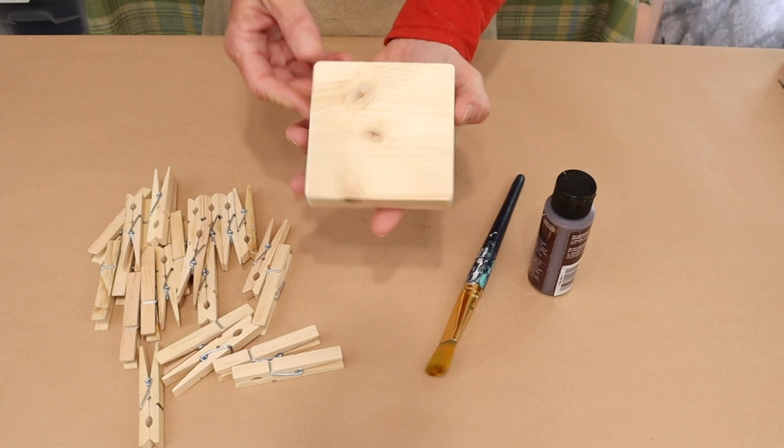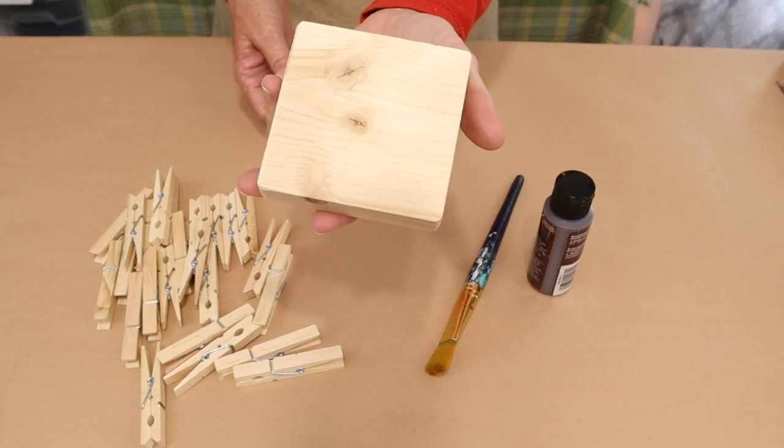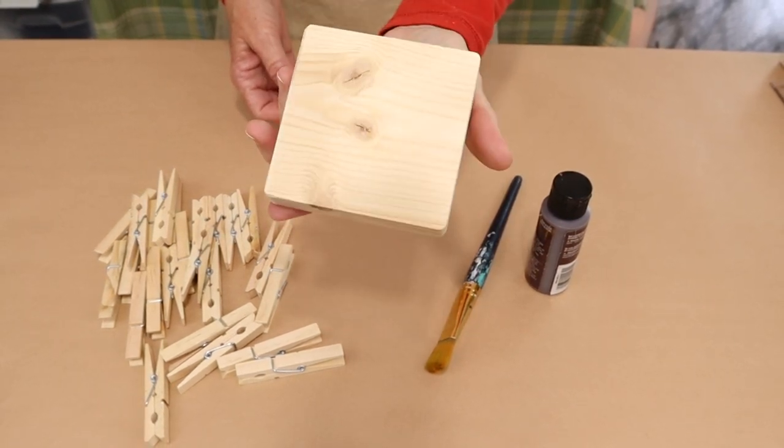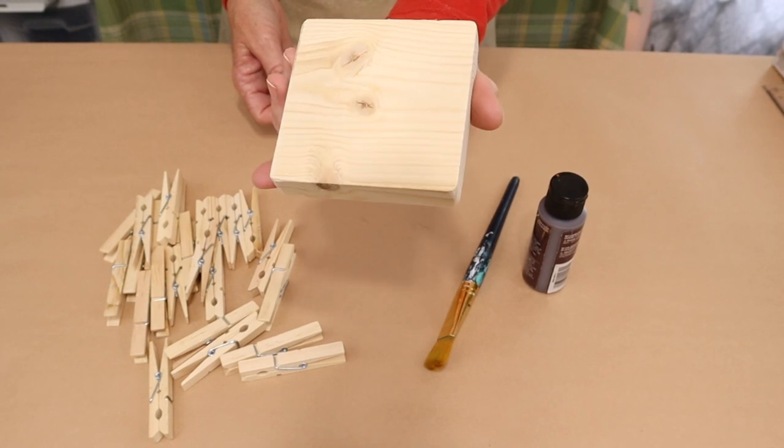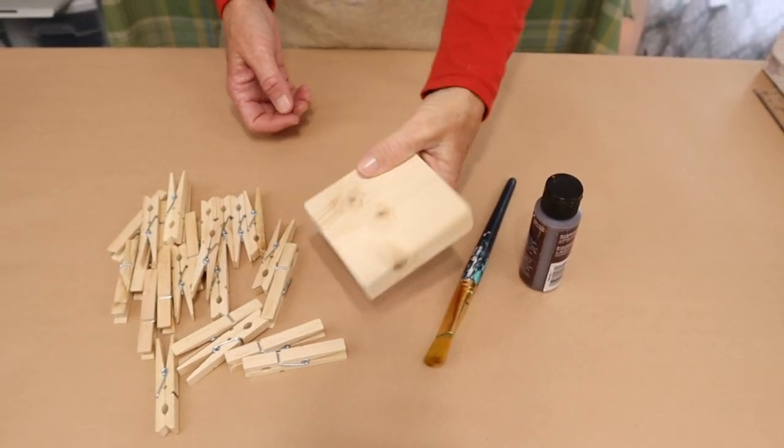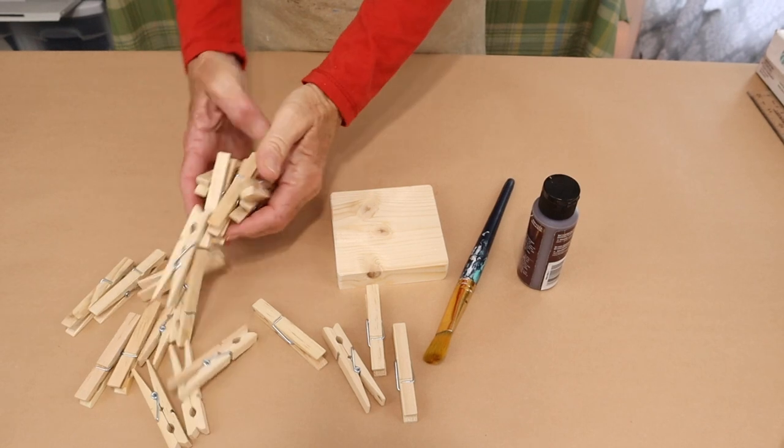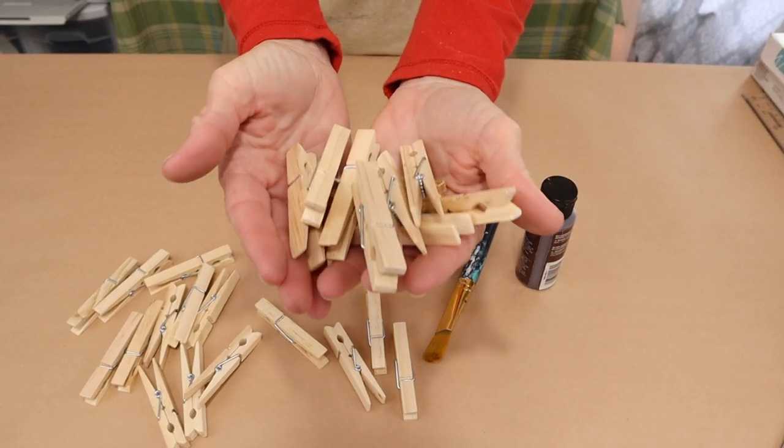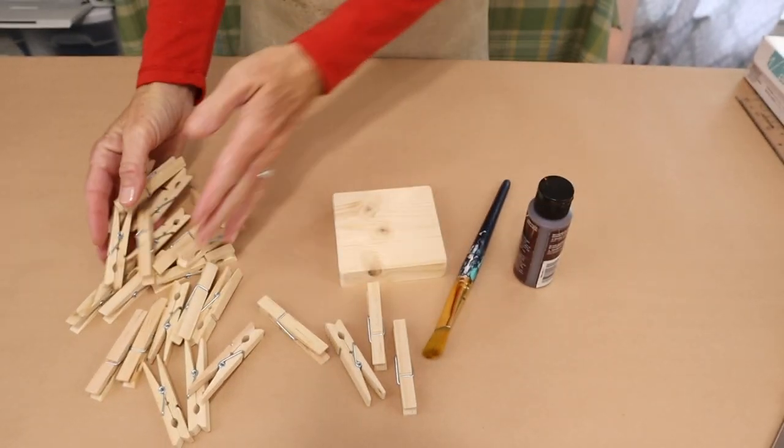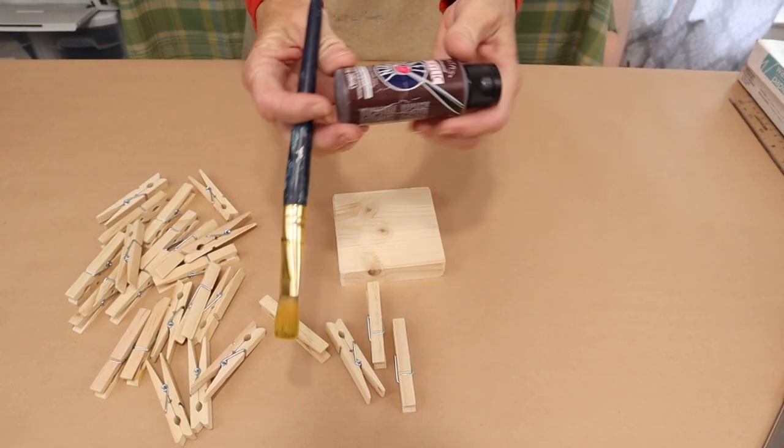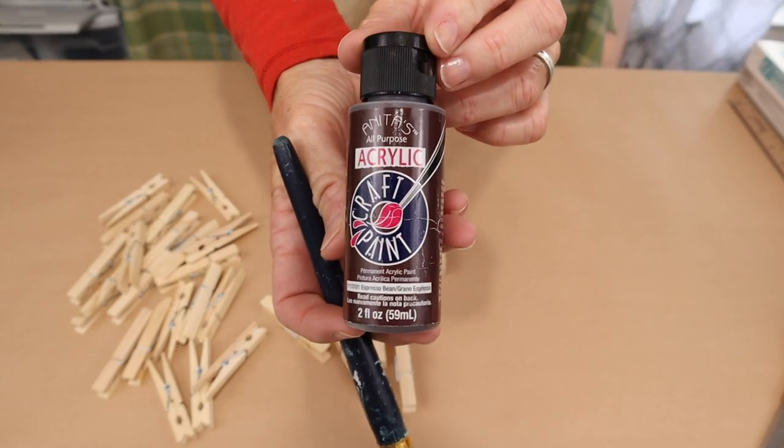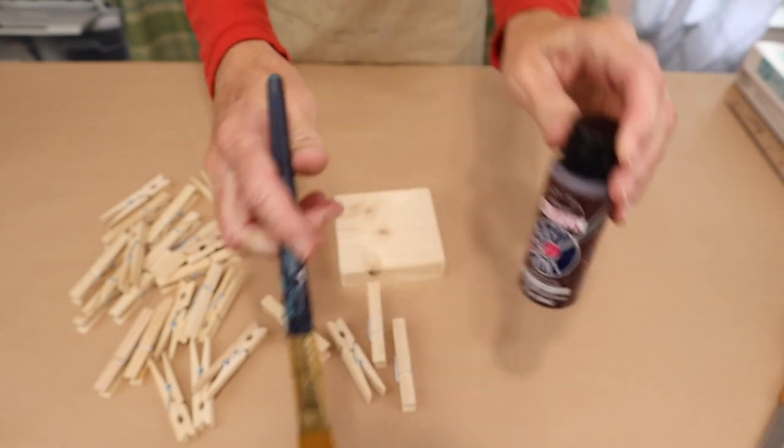Okay, for this project we're just going to need a few simple things. We're going to need a square of wood. This measures three and a half by three and a half by three quarters of an inch thick. And then we're going to need some natural wood clothespins. And then just the paint color of your choice. I'm going to be using this Espresso Bean in Anita's.